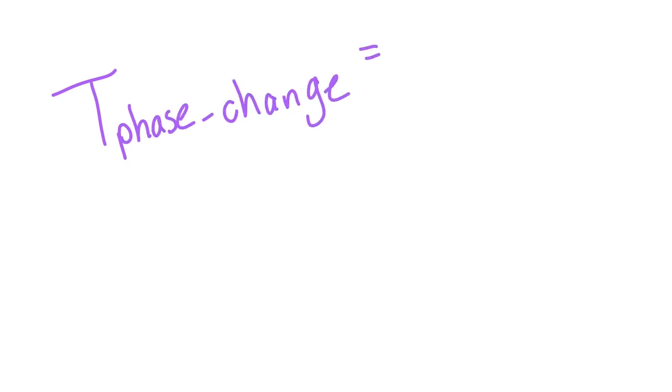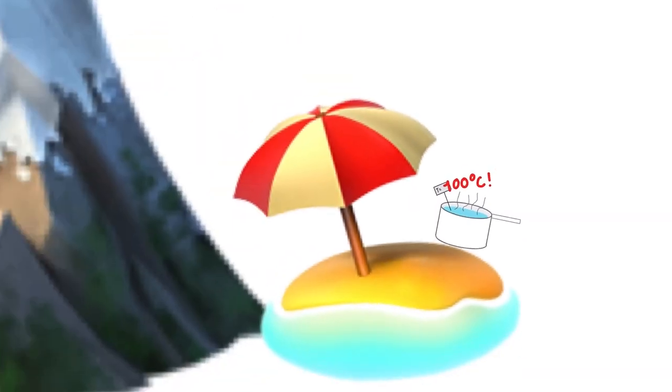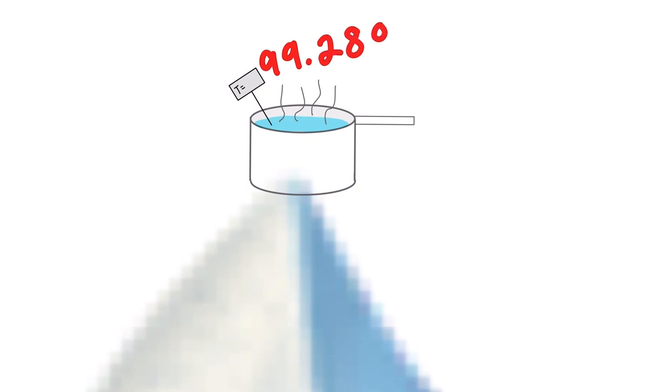Different pressures can also change the temperature at which a phase change occurs. For example, we're all pretty familiar with the idea that water boils at 100 degrees Celsius. But this isn't always true. At higher altitudes, water can boil at a slightly lower temperature because the air pressure is lower than it is at sea level.